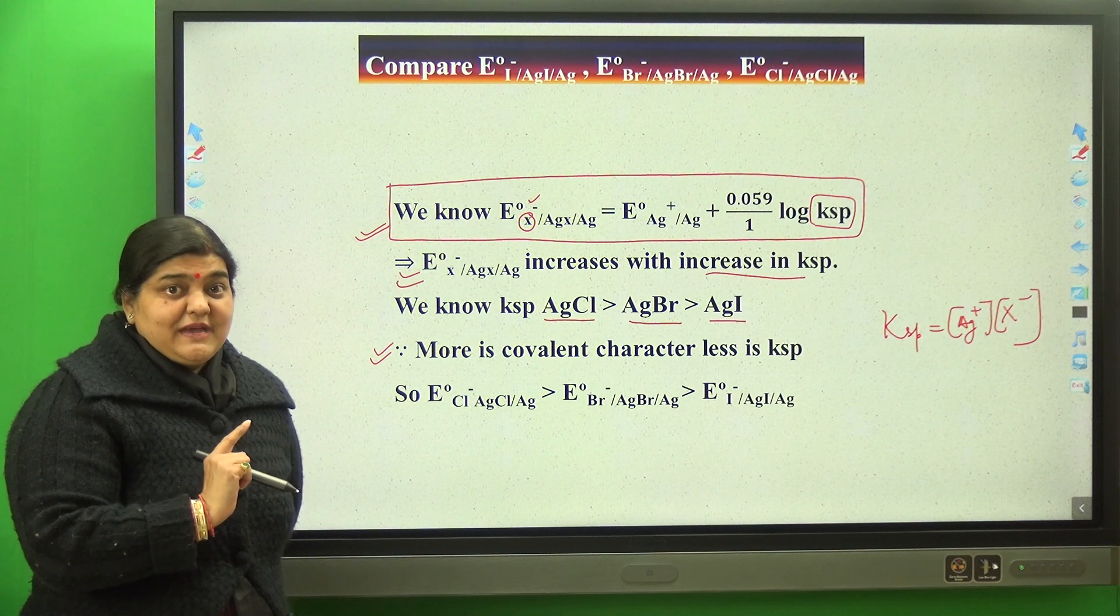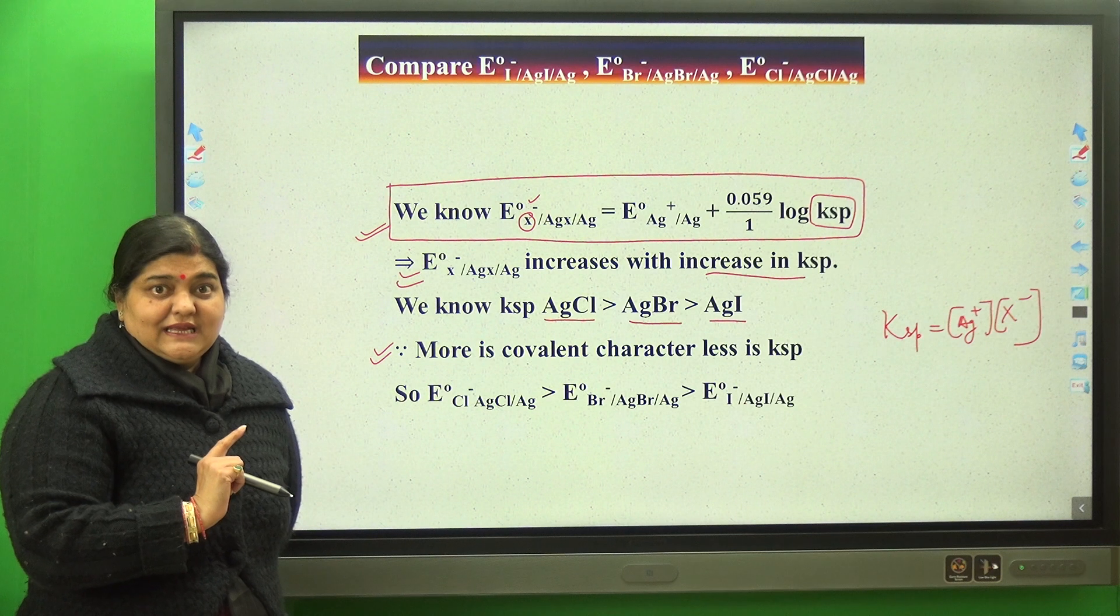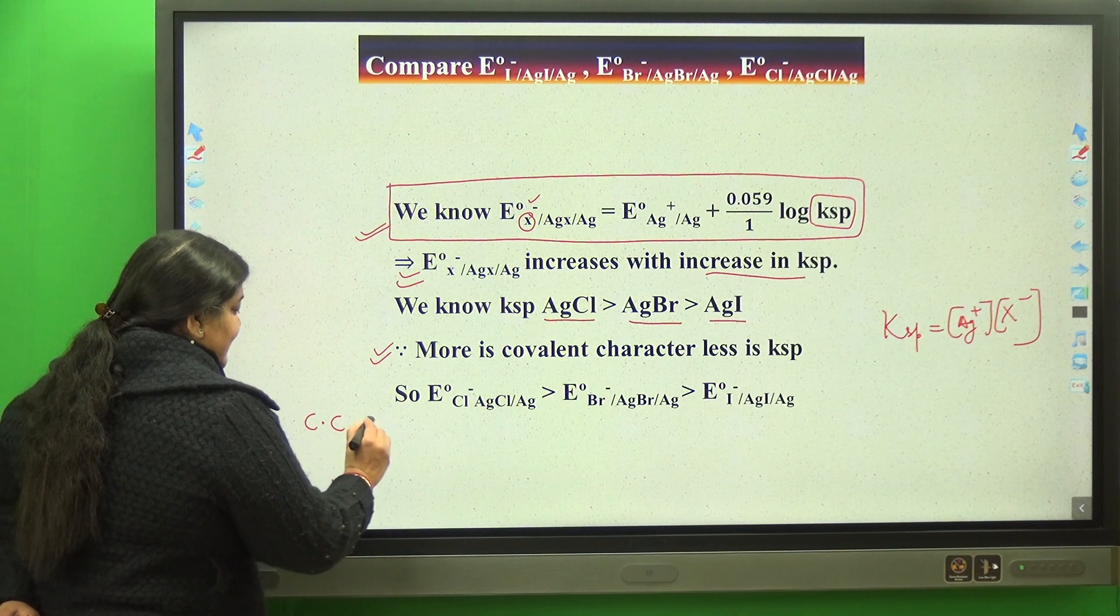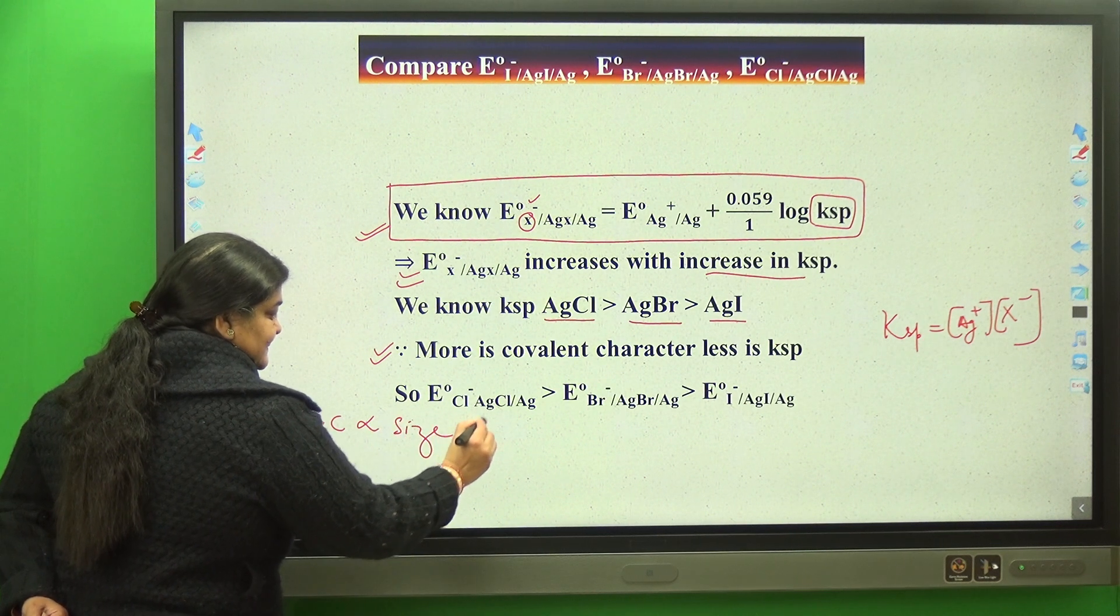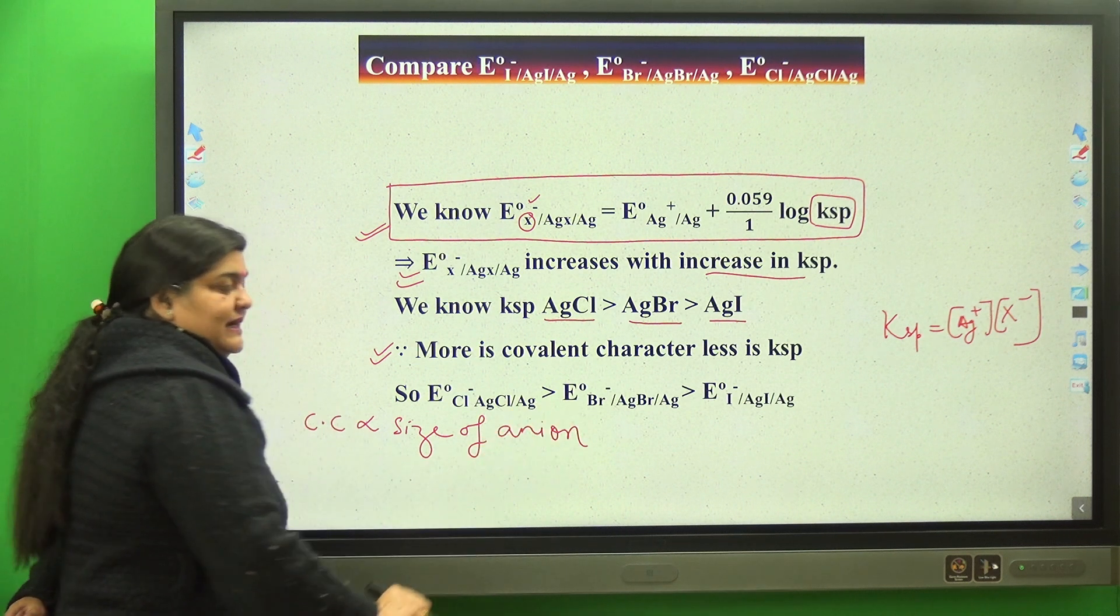Covalent character is directly proportional to size of anion and is inversely proportional to size of cation. The cation is common.